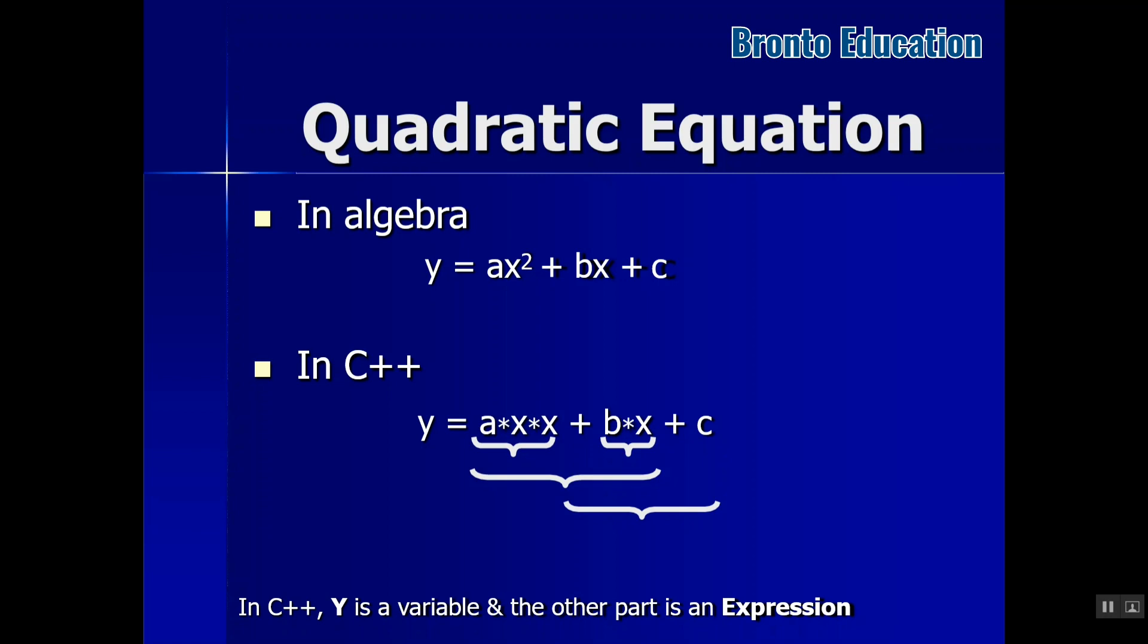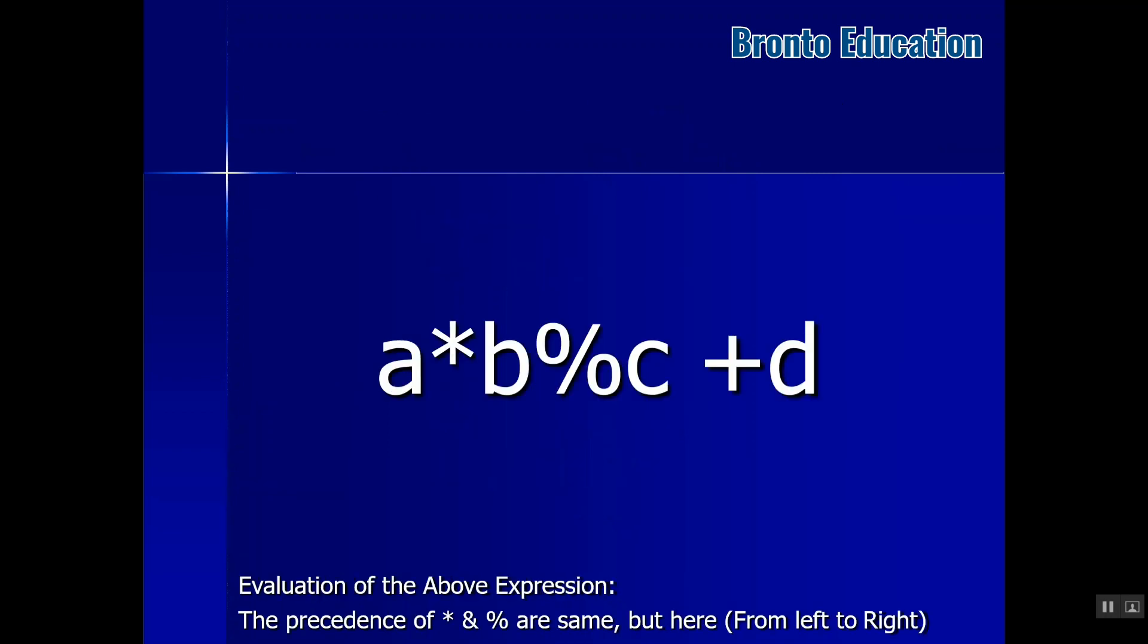We didn't use that one, it's okay, we will try it in the next lectures. So here we have a multiplied by b modulus c plus d. Which one will be calculated first? a multiply by b, because multiplication and modulus have the same precedence, so we will start from the left side: first multiplication, then modulus, then plus.